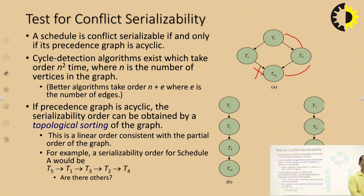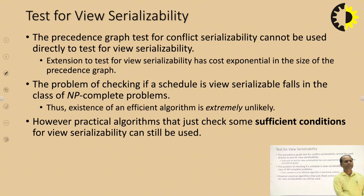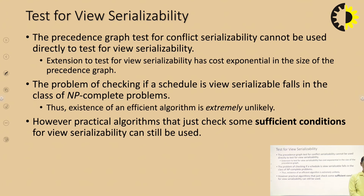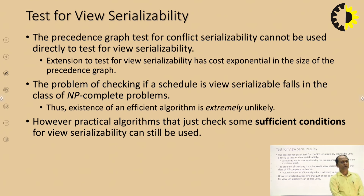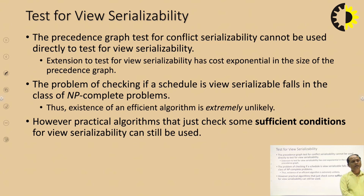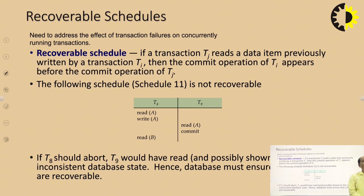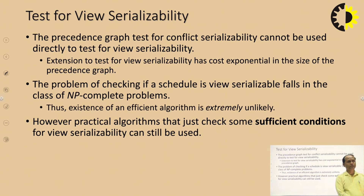For view serializability testing: the precedence graph test for conflict serializability cannot be directly used to test view serializability. Testing for view serializability has exponential cost in the size of the precedence graph — checking if a schedule is view serializable is an NP-complete problem. We cannot easily calculate it. Every conflict serializable schedule is view serializable, but every view serializable schedule is not necessarily conflict serializable.